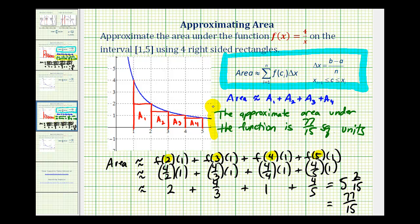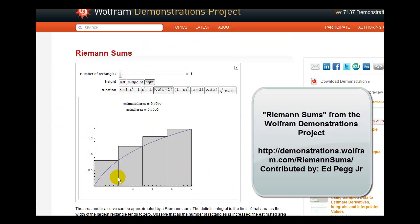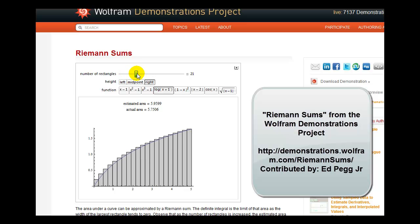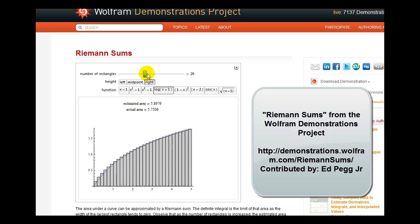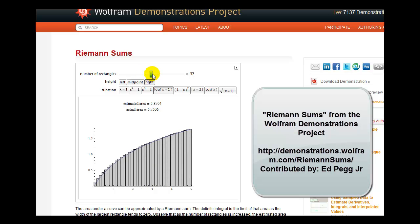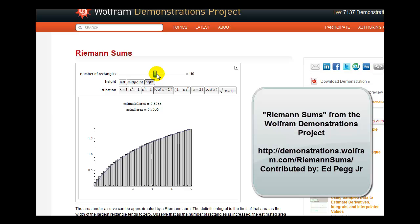Next, we'll do the same problem again using left and right-sided rectangles, but we'll use 8 rectangles instead of 4. The idea is the more rectangles we use, the better our approximation would be. To visualize this, we can take a look at a Wolfram demonstration. Here we're using 4 right-sided rectangles, and as we increase the number of rectangles, you can see the approximation gets better. If we took the limit of this sum as n approached infinity, we would actually approach the area under the curve.